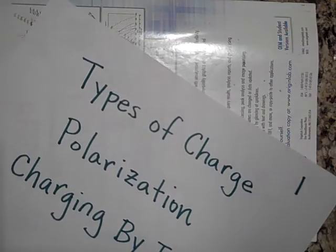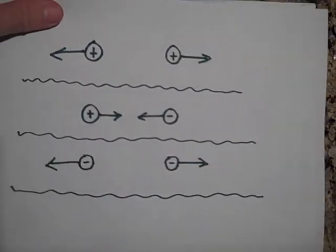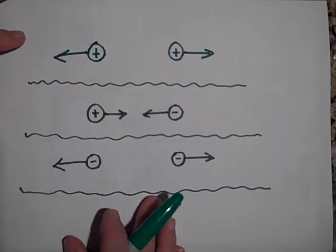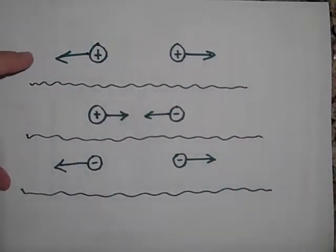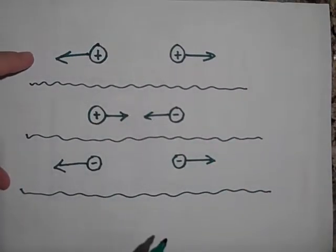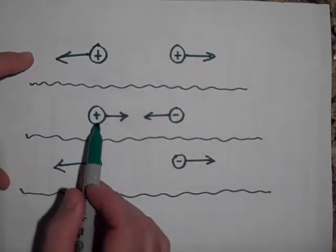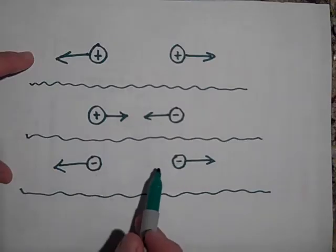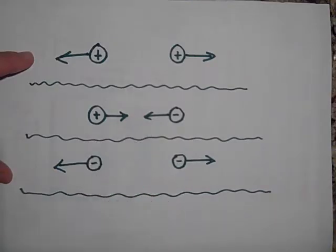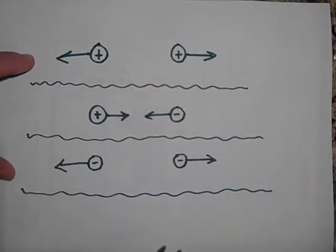So there's two types of charge, as you've learned already, probably in biology, chemistry, and any other physics class you've taken. You have positive charge and you have negative charge. Two positive charges will repel one another. Two negative charges repel one another, and a positive and a negative charge attract one another. Protons carry the positive charge and electrons carry the negative charge.